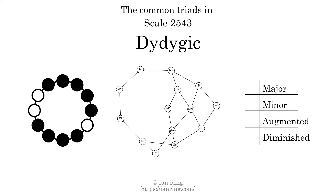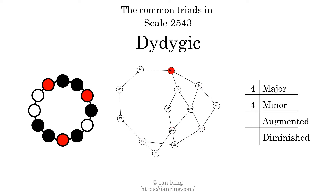Here are the common triads present in this scale. The diagram in the center is a graph of parsimonious voice leading between triads. There are 4 major triads, 4 minor triads, 1 augmented triad, and 5 diminished triads.